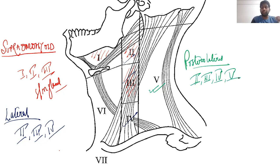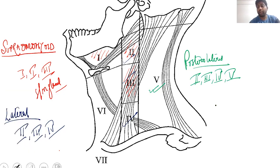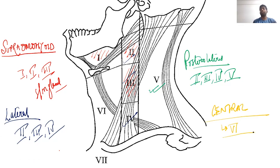To summarize the selective neck dissection subtypes: supraomohyoid is 1, 2, 3; extended supraomohyoid is 1, 2, 3, 4; lateral is 2, 3, 4; posterolateral is 2, 3, 4, 5 (including posterior triangle lymph nodes). There is also another entity — central group lymph node dissection — in which we remove lymph node station 6. These are the four important subtypes of selective neck dissection.